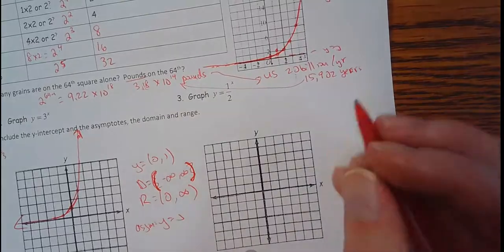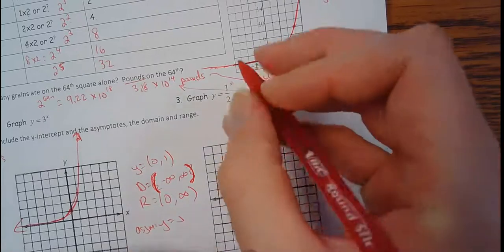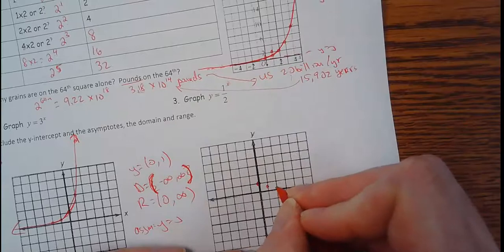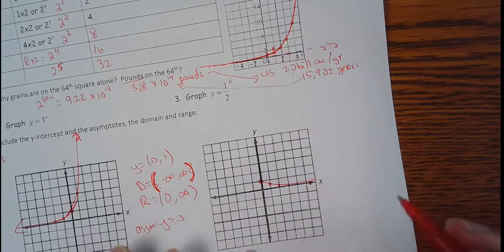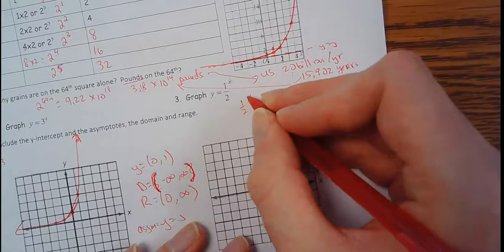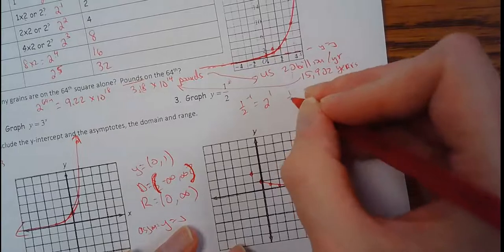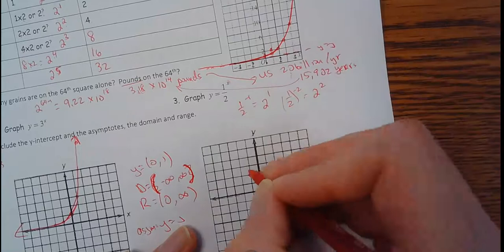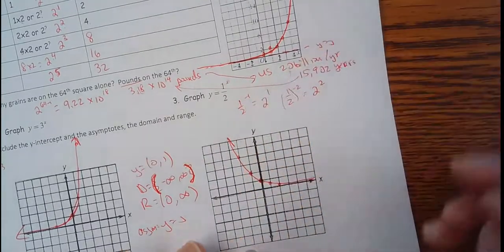Over here, one half to the x power. If I plugged in a zero, the zero power is one. And then if I plugged in a one, one half to the one power is a half. One half squared is a fourth. And notice it's going backwards here. It's going to keep going down. What's going to happen as I go to the left? Well, if I plugged in negative one, negative means flip it over. So it'd be the same thing as two to the first. So this is actually two. If I took one half to the negative two power, the negative means flip it over. So it'd be two squared, which is four. And it's taken off going this way.